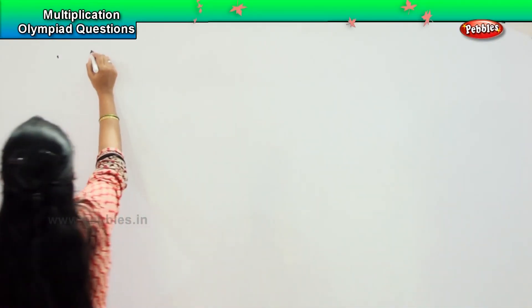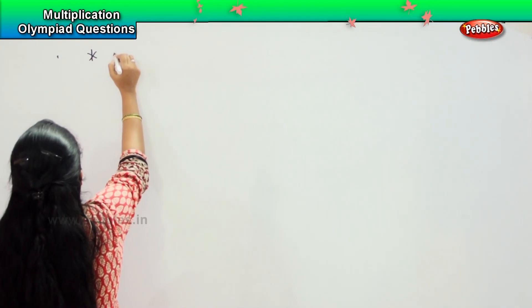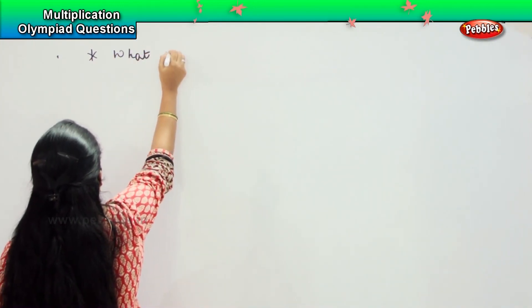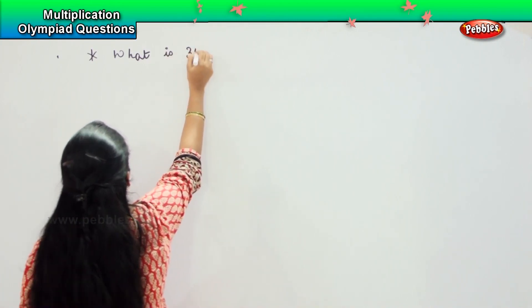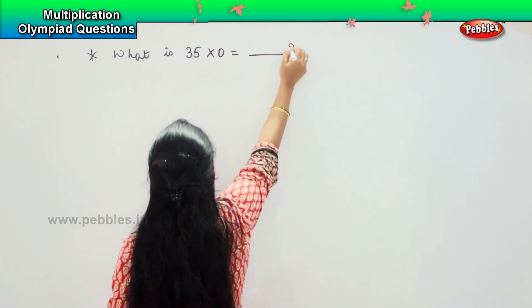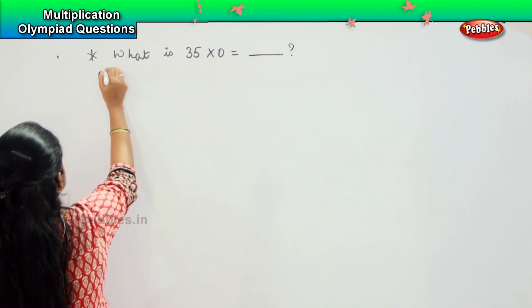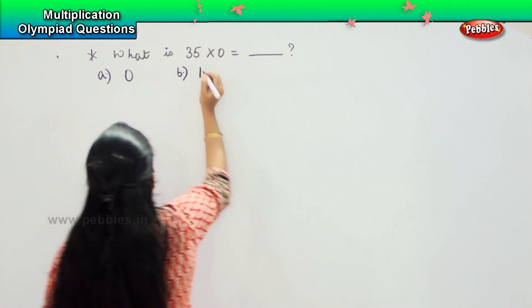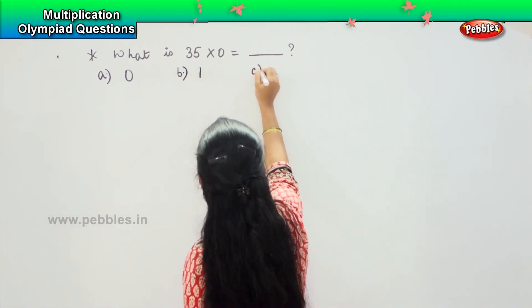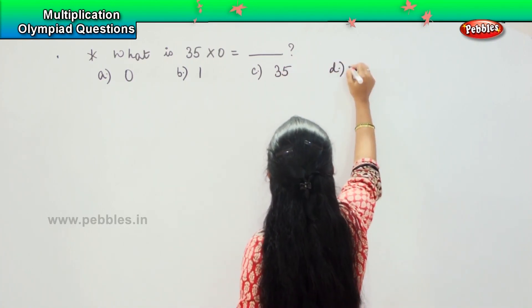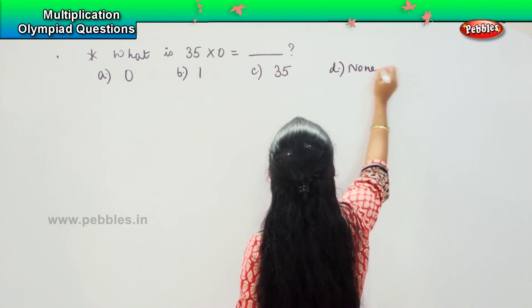Now here is the mental maths question. You need to tell me what is 35 into 0 and your options are: a) 0, b) 1, c) 35, and d) none of these.